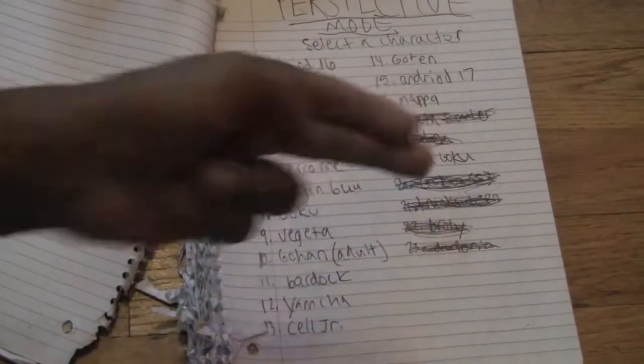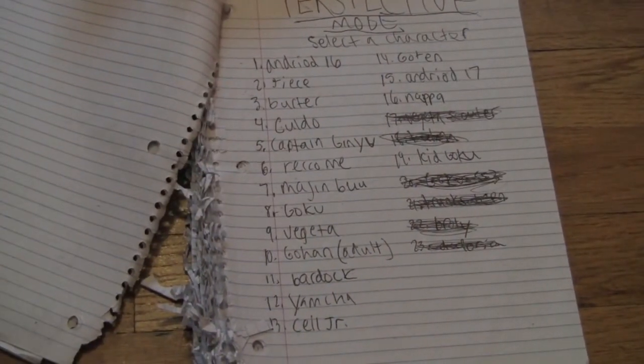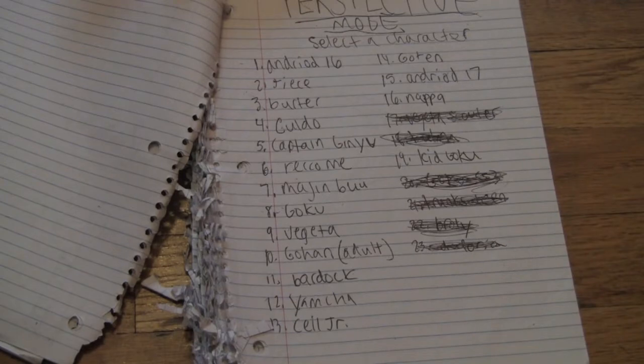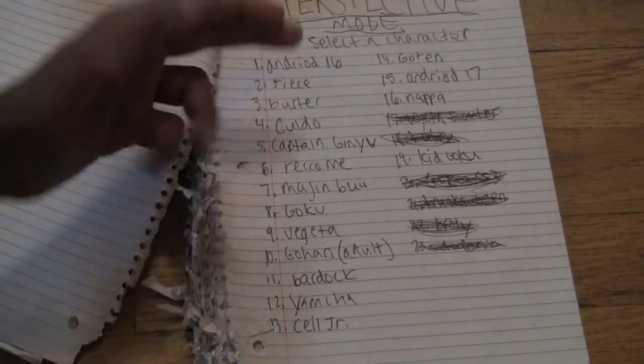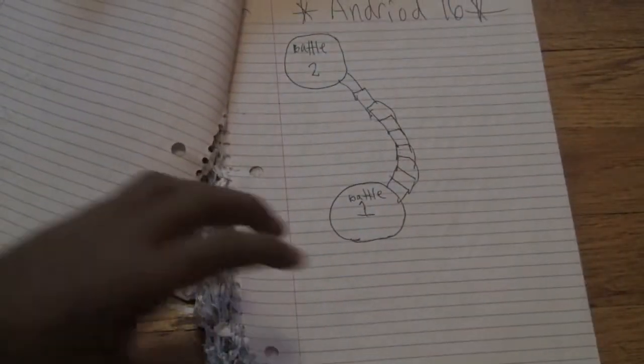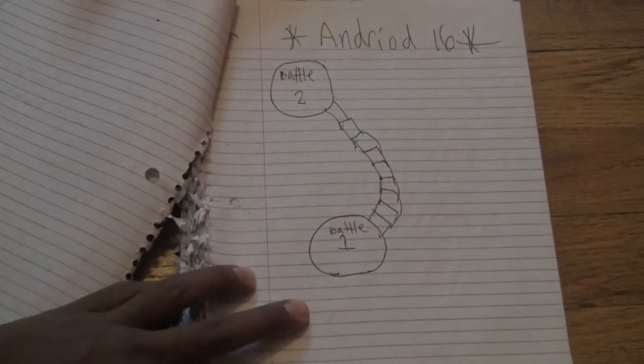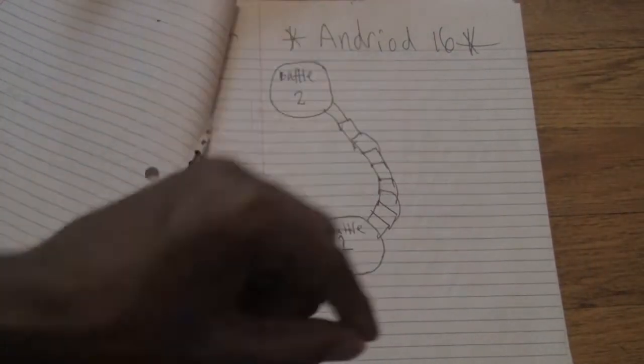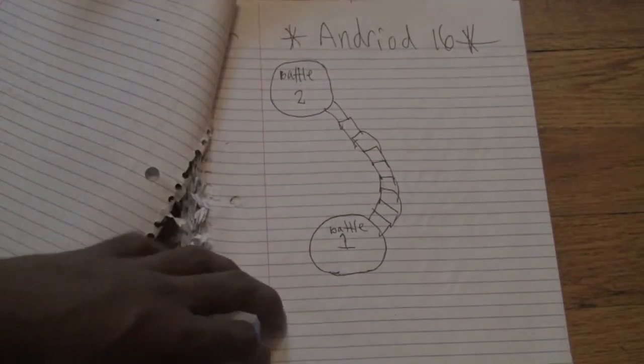Oh, and Kid Goku that you can play as. I'm going to go into the Android 16 perspective mode. So we are right here. So the layout changed. Remember in the last three games, you would pick a battle, then select very easy, that type of stuff.